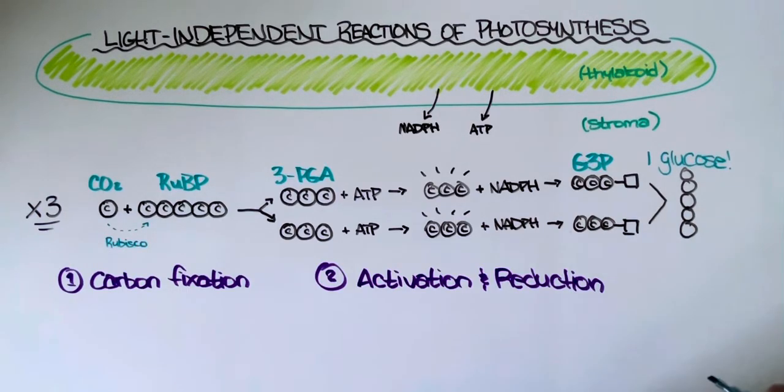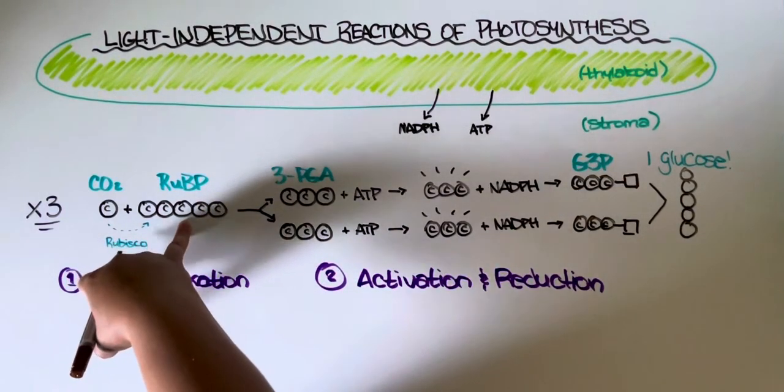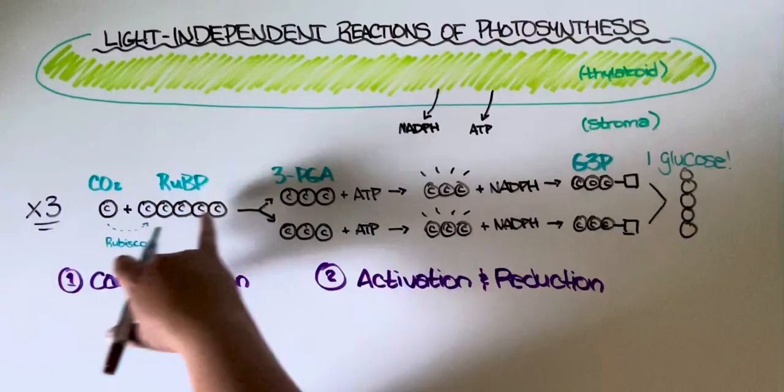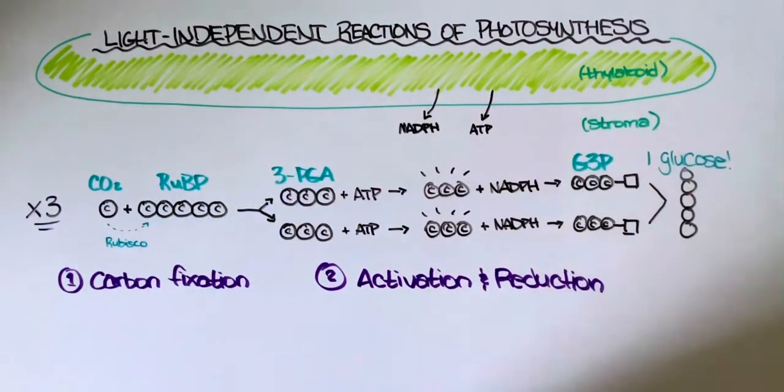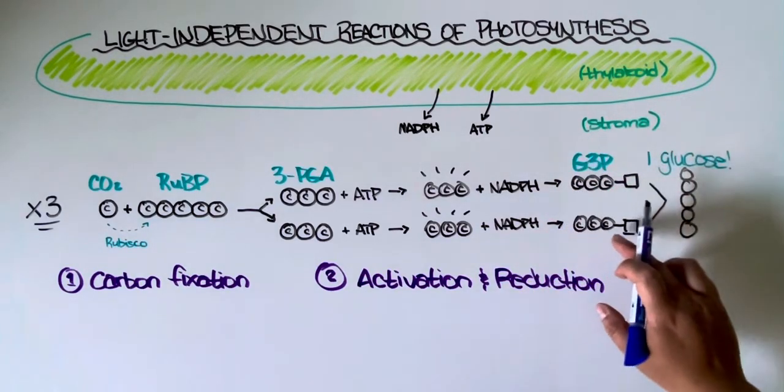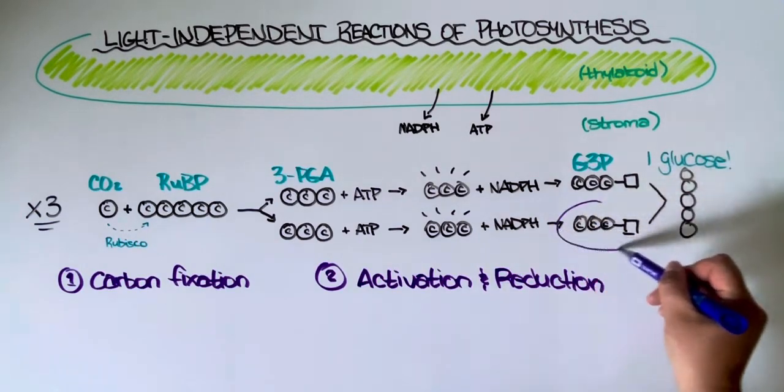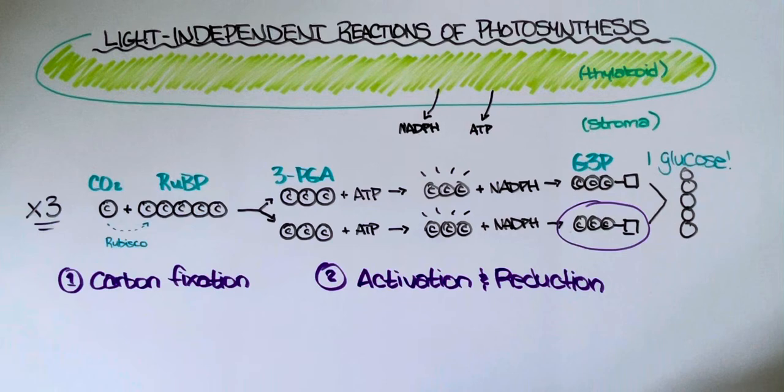What the cell needs to do is find a way to replace this RuBP molecule, which if you recall was very carbon dense—five carbons—in order to make the RuBP. And the only way it can do that is by taking the majority of the G3P that was created here through reduction, and it uses that to regenerate or replace the RuBP.